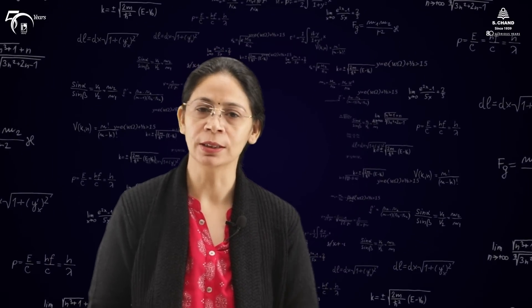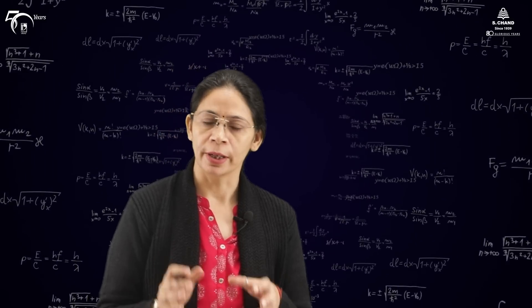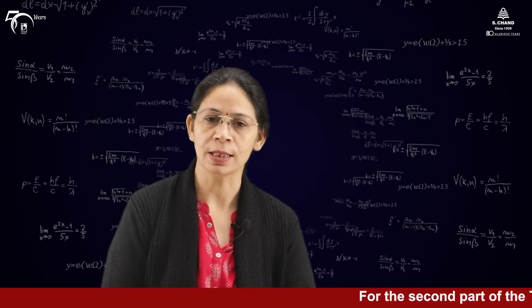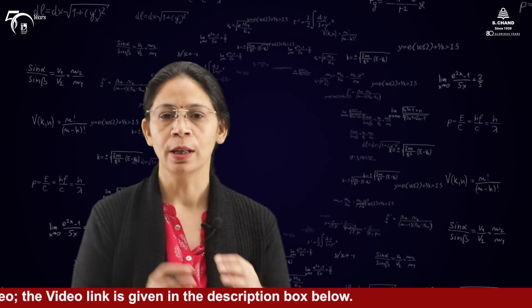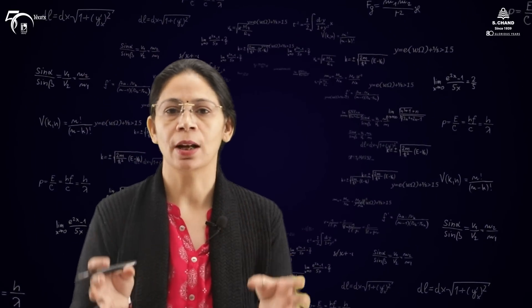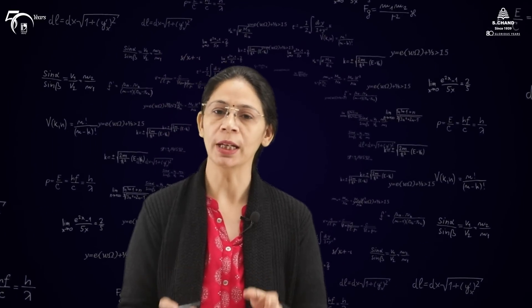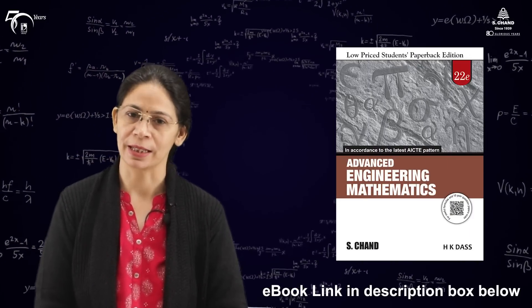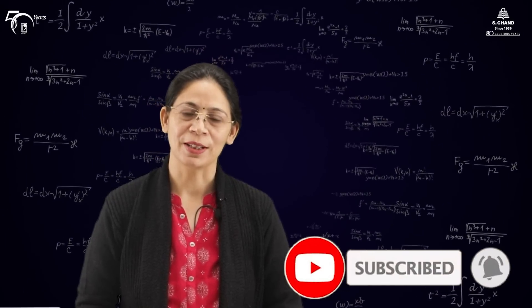In this part of the video we have learned the Cauchy-Riemann equations, also called CR equations, and the relation between CR equations and analyticity of a complex variable. A function is said to be analytic if it satisfies both CR equations simultaneously: ∂u/∂x = ∂v/∂y and ∂u/∂y = −∂v/∂x. For more details, please refer to the book from S.Chan Publishing; details are on the site and the link is in the description box. Please like, share, and subscribe, and press the bell icon to get notifications of upcoming videos. Thank you.